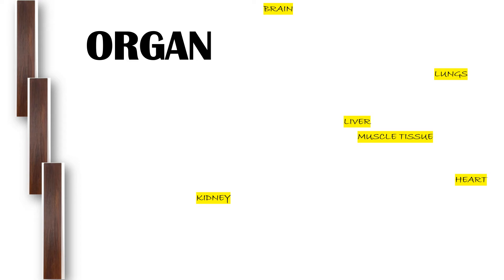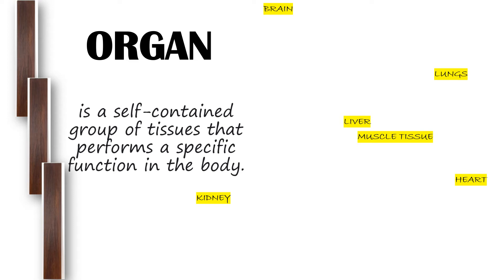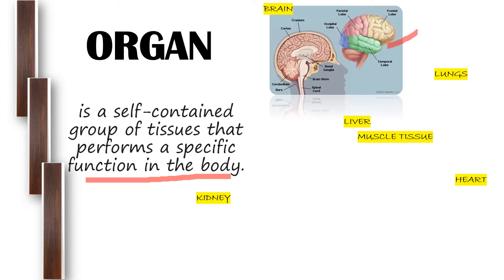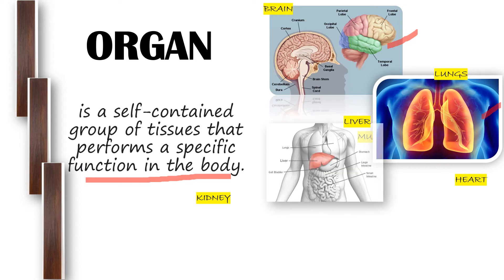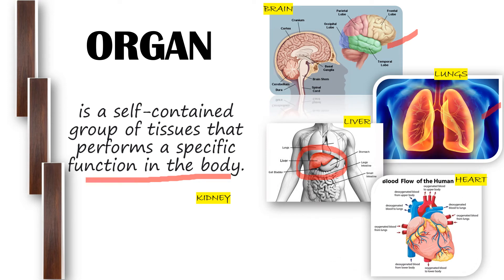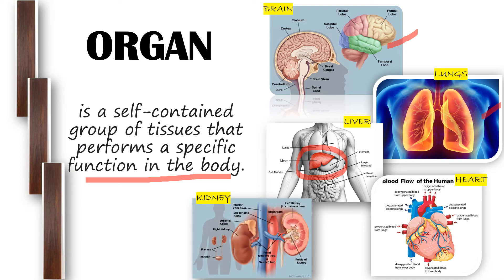Next is organ. An organ is a self-contained group of tissues that performs a specific function in the body. Examples of organs include the brain, lungs, liver, heart, and kidneys. Take note that organs are found inside our body. Aside from these, we also have the human eyeball, intestine, and pancreas — those are organs that can be found inside the body.